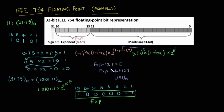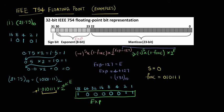Now let us write the sign value. Since this is a positive number, sign is 0. The fraction is the part after the implicit leading 1 — that is 010111. Now let's fill up the 32-bit word: sign bit is 0, fraction is 010111 followed by zeros, and the exponent value is 10000011. This is the required floating-point number equivalent for this decimal value.